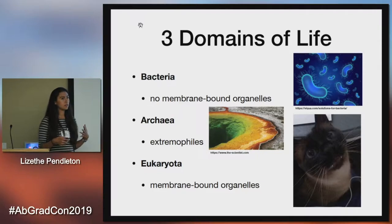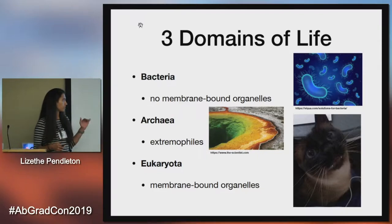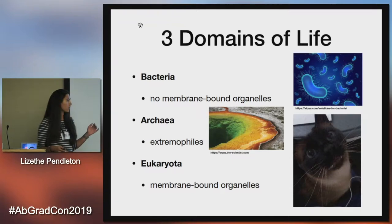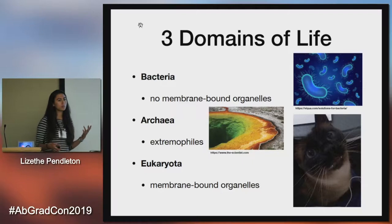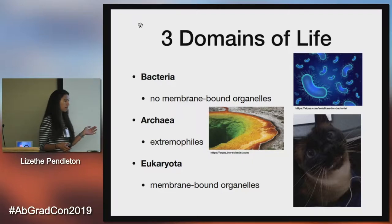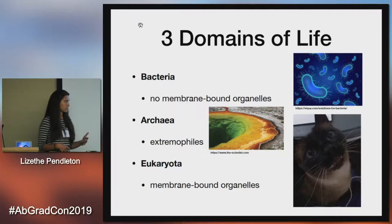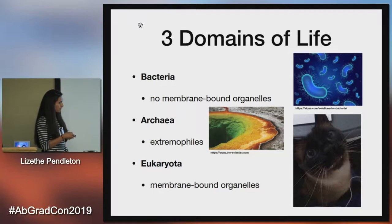A very simple breakdown of the three domains — which are bacteria, archaea, and eukaryota — is that bacteria have no membrane-bound organelles. Archaea are typically known for being extremophiles, and eukaryota have membrane-bound organelles within their cells. And here is my favorite eukaryota: my cat.